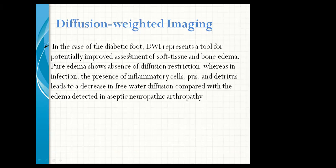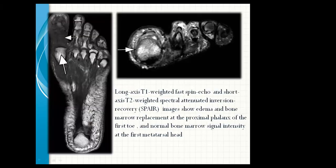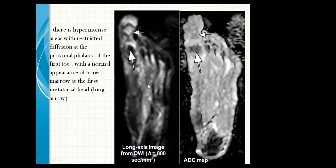Diffusion-weighted imaging. In the case of diabetic foot, it presents a tool for potentially improved assessment of soft tissue and bone edema. Pure edema shows absence of diffusion restriction, whereas in infection, the presence of inflammatory cells, pus, and debris leads to decreased free water diffusion compared with the edema detected in aseptic neuroarthropathy. A DWI b800 and ADC map show a hyperintense area with restriction diffusion at the proximal phalanx of the first toe, with normal bone marrow signal intensity at the first metatarsal head.